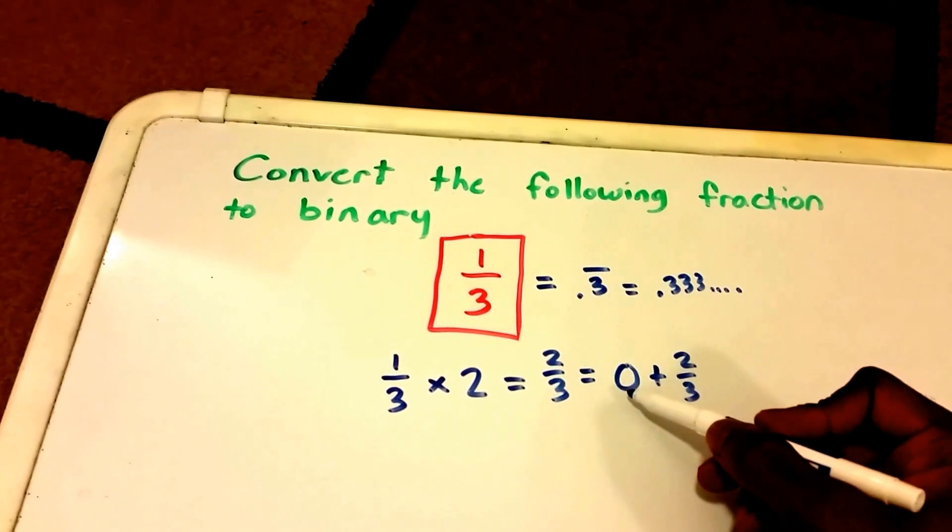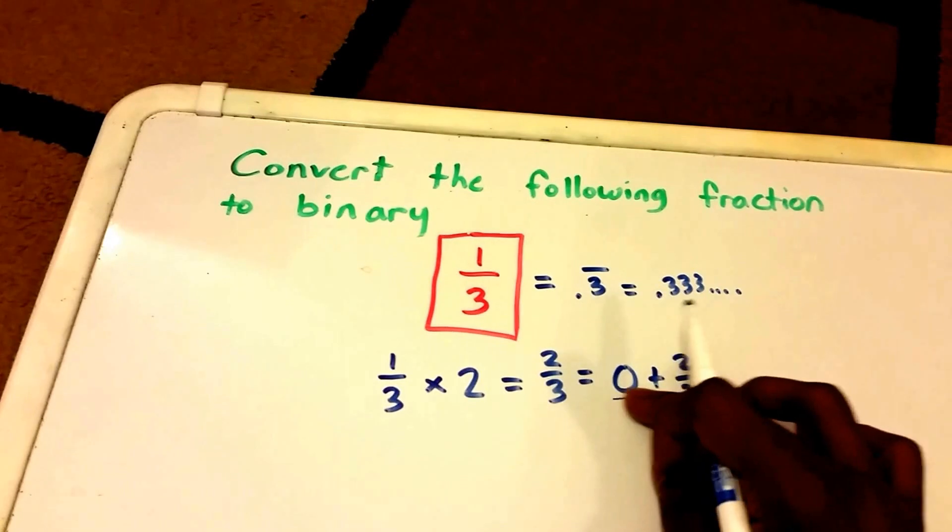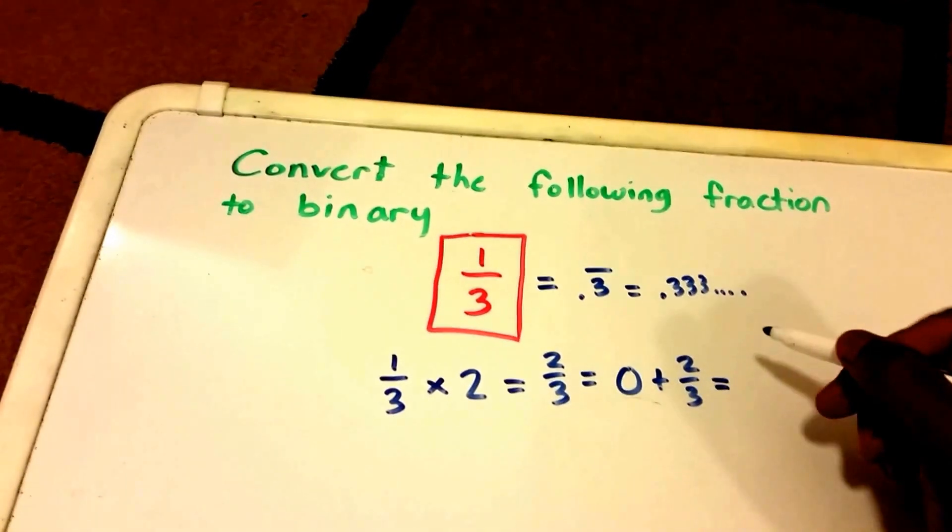So what we do is we take that first whole number, which is the 0, and it becomes our first binary digit, which is 0.